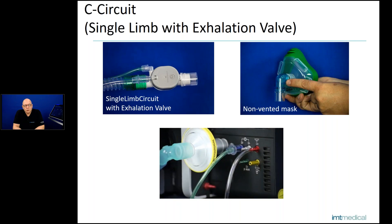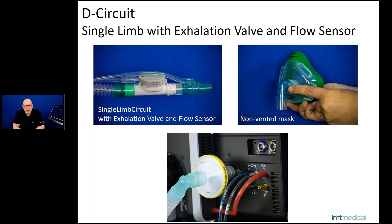The D circuit is also a single-limb circuit with an exhalation valve on the proximal side, but also has a flow sensor. With a flow sensor you can ventilate in any way: life-sustaining, invasive, non-invasive. You can use a non-vented mask for non-invasive. You also need to connect the flow sensors to the interfaces on the right side. I always recommend using a filter to prevent the inspiratory valve from fluid intake, because after the connector there is the inspiratory valve — if any fluids entered the ventilator there could be damage. So always have a filter on the inspiratory side.